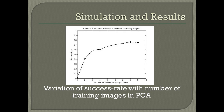Coming to the simulation and results, this first graph shows the variation of the success rate with the number of training images in the case of PCA. It can be seen that as the number of training images is increased from 1 to 9, the success rate increases. As more and more images are used, a better recognition system is built.